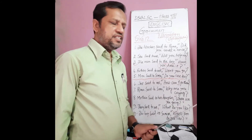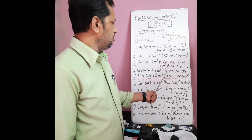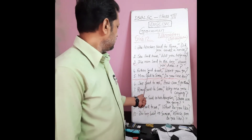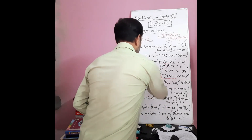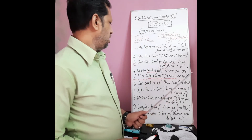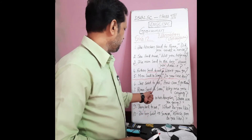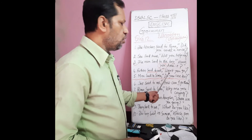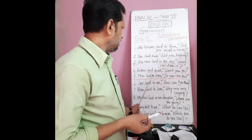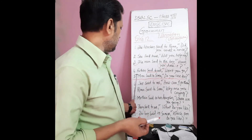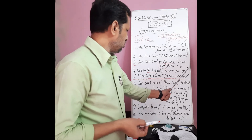Example four: 'Father said to me, won't you go?' — 'won't' means 'will not.' So 'said to' turns into 'asked.' 'Will not' turns into 'wouldn't.' So: 'Father asked me if I wouldn't go.'